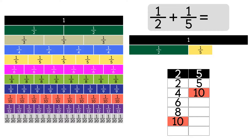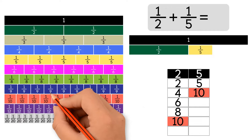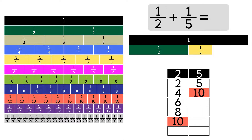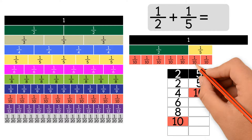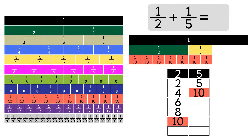This means that we'll use the strips with 10 in the denominator. Now we line up the 1 tenth strips under the 1 half: 1, 2, 3, 4, 5. So 1 half is equal to 5 tenths. Now we'll line up the 1 tenths under the 1 fifth: 1, 2. So 1 fifth is equal to 2 tenths. Add up the 1 tenths strips — we have 7 tenths strips. So 1 half plus 1 fifth equals 7 tenths.